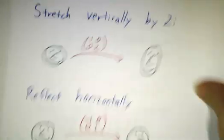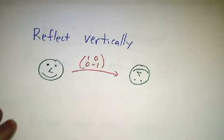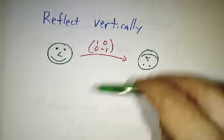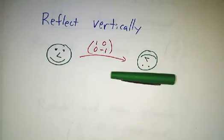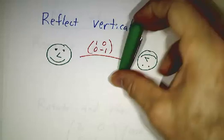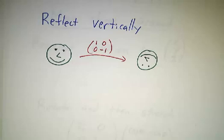If you want to reflect things vertically, you just use the matrix [[1,0],[0,-1]]. Because (1,0) reflected vertically is still (1,0). (0,1) reflected vertically becomes (0,-1).